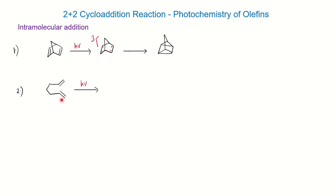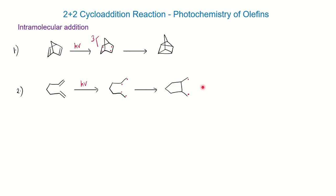Similarly, in the second example, the molecule again has two non-conjugated double bonds under photochemical condition. We can show the 2+2 cycloaddition reaction from the triplet state. You can see here that first a bond forms to give a cyclopentene ring, leaving behind a biradical intermediate, which then combines to give the bicyclic compound.